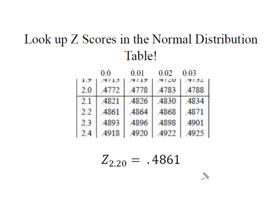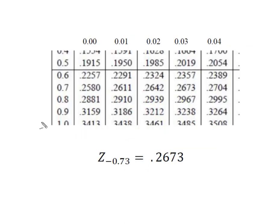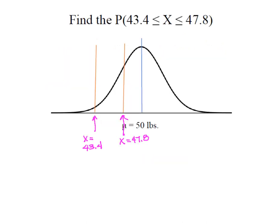My 2.20, remember I'm going to start here at 2.2. I'm going to pick up the 0.0 gives me 0.4861 for that value of X. And for my value of X of 0.73, I'm going to pick up this 0.7, I'm going to pick up that 0.03. The intersection is going to be that 0.2673.